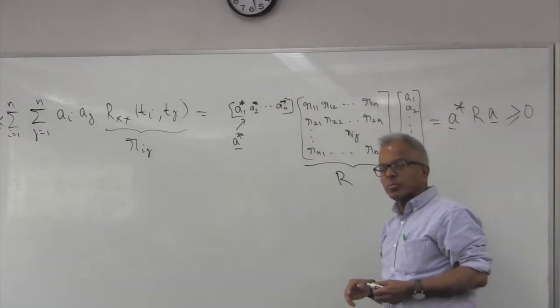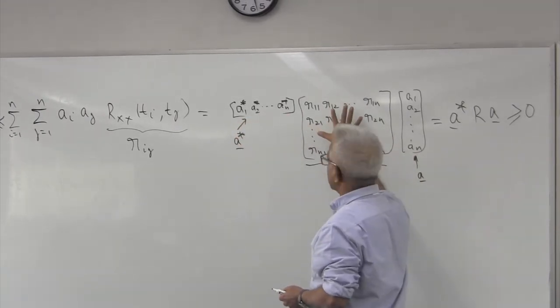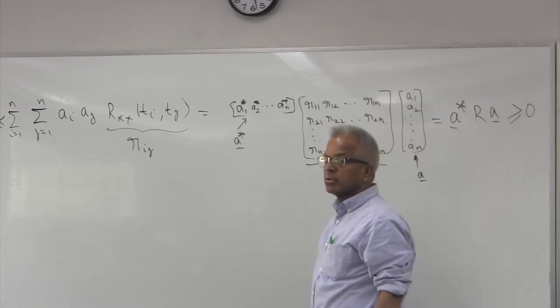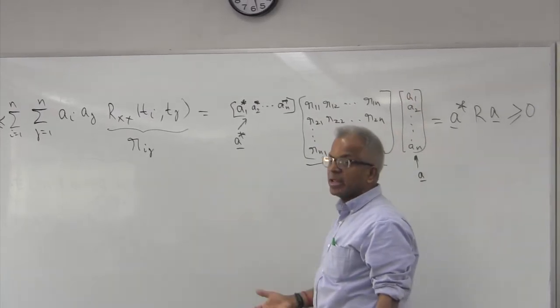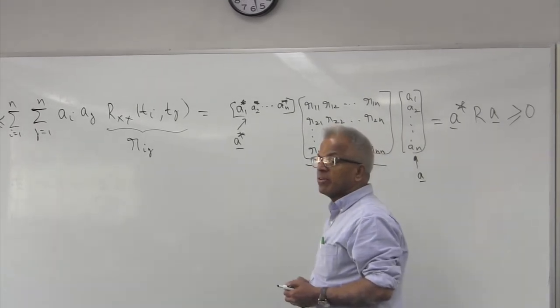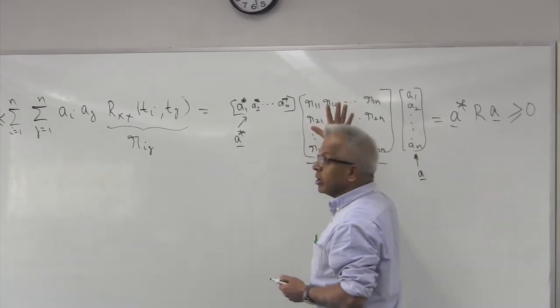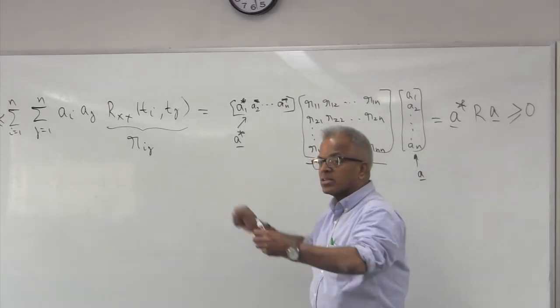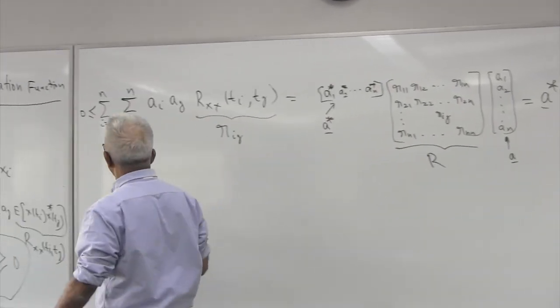This is of course the definition of this matrix being non-negative definite. So a matrix is said to be non-negative definite if A transpose matrix A is non-negative for any vector. Remember, I didn't put any specification on A, A was arbitrary. So if this is true for an arbitrary vector, then we call the matrix to be non-negative definite.